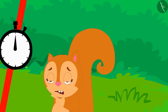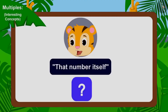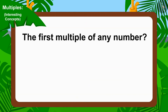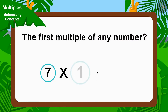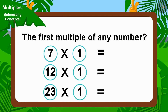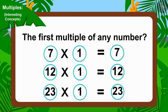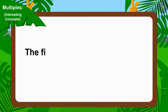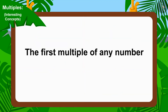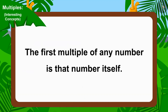Is Sheer Khan's answer correct? What will we do if we want to find the first multiple of any number? We must multiply that number by 1. And if we multiply any number by 1, the answer will be the number itself. So, Sheer Khan's answer is absolutely correct: the first multiple of any number is that number itself.